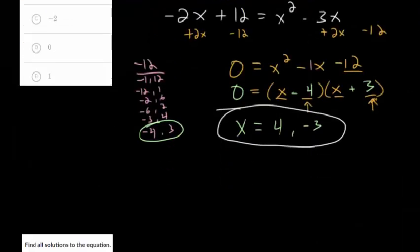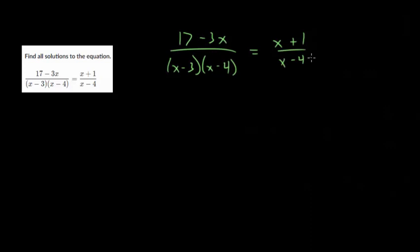Let's keep going on these. Some of these can be fairly challenging. I'll just rewrite this: 17 minus 3x over x minus 3 times x minus 4 equals x plus 1 over x minus 4.